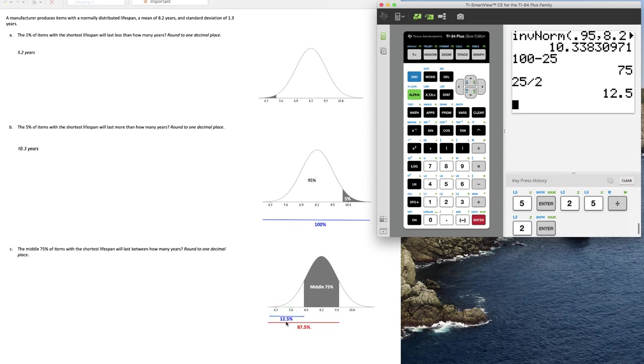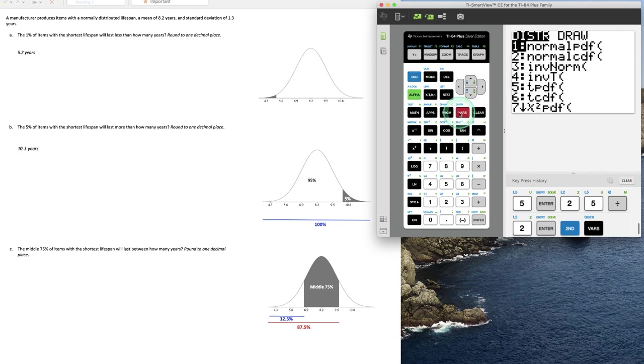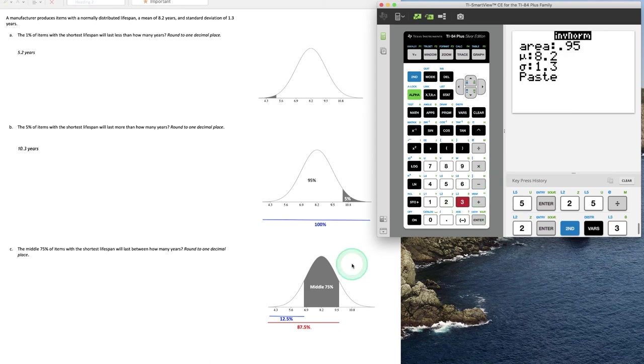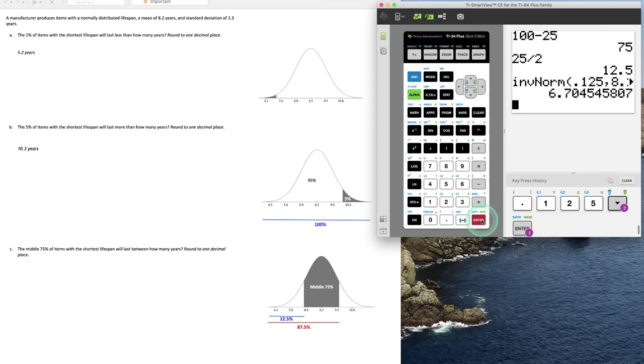We're going to have to do two separate inverse normal distribution functions in our calculator. Let's go ahead and find the smallest x coordinate. So let's go ahead and hit 2nd VARs, number 3 for inverse normal distribution. And the area to the left here that will correspond to this first smallest x value will be 12.5%, which is 0.125. Mean and standard deviation stay the same and go ahead and paste.